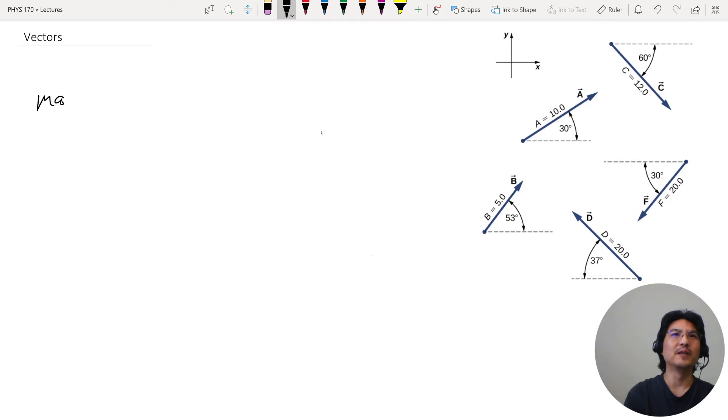The magnitude, you can write it like this. For example vector A, you can write it like this, magnitude, or you can just write it like this, same thing, magnitude of 10.